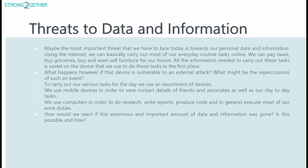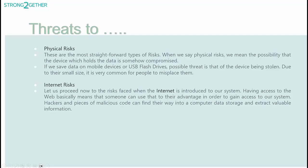A major challenge today is safeguarding personal data online. Tasks like taxes, shopping, and work are done using devices storing essential information — but if these devices are attacked, what could happen? We use mobiles for contacts and tasks, computers for work. There are two main types of risks: physical risks — when the device containing data is compromised, for instance if mobiles or USB drives are stolen or lost due to their small size — and internet risks — when connected to the internet, hackers and malicious code can infiltrate data storage in computers and extract valuable information.